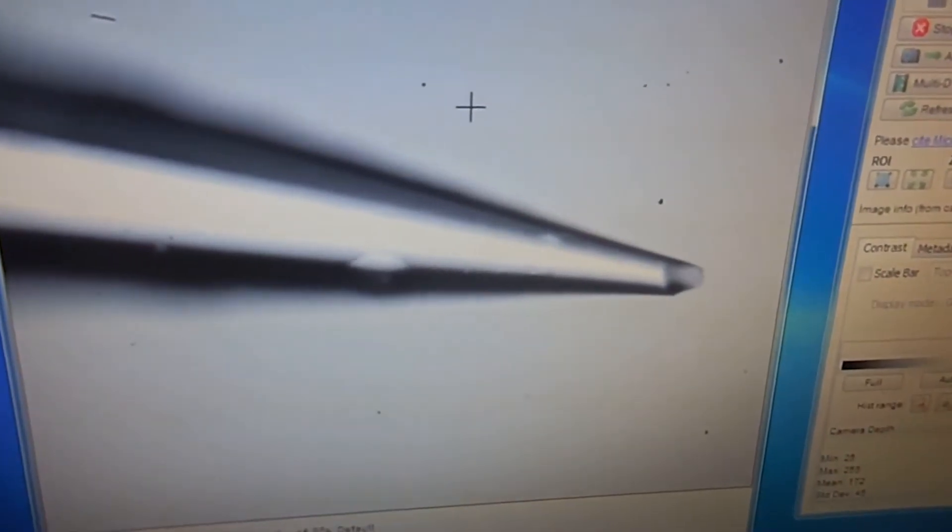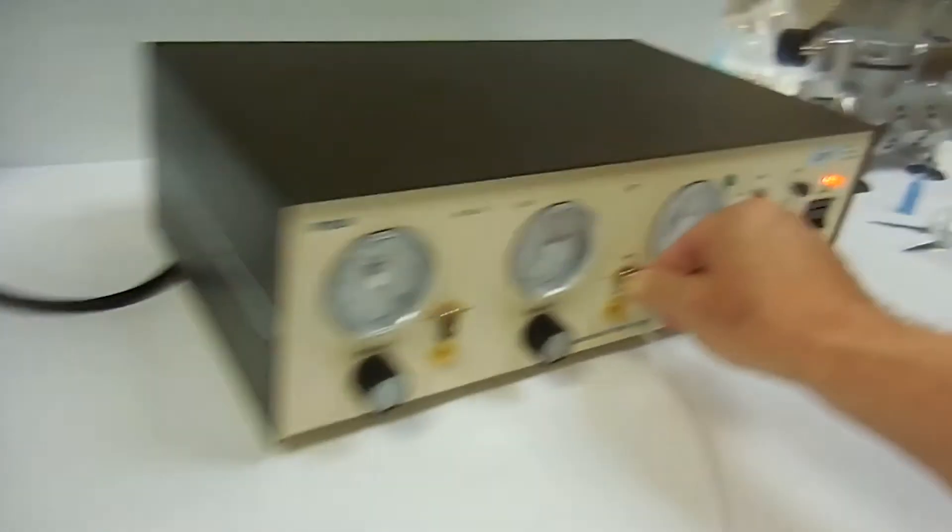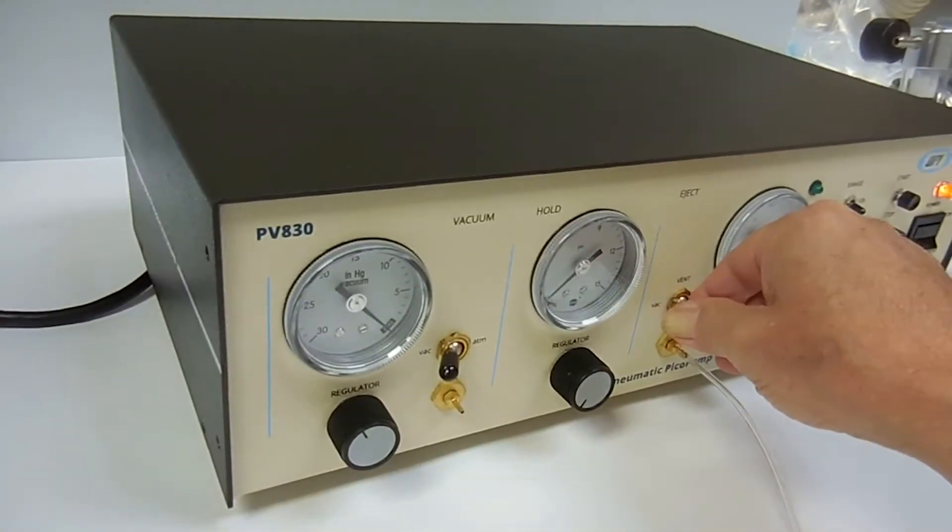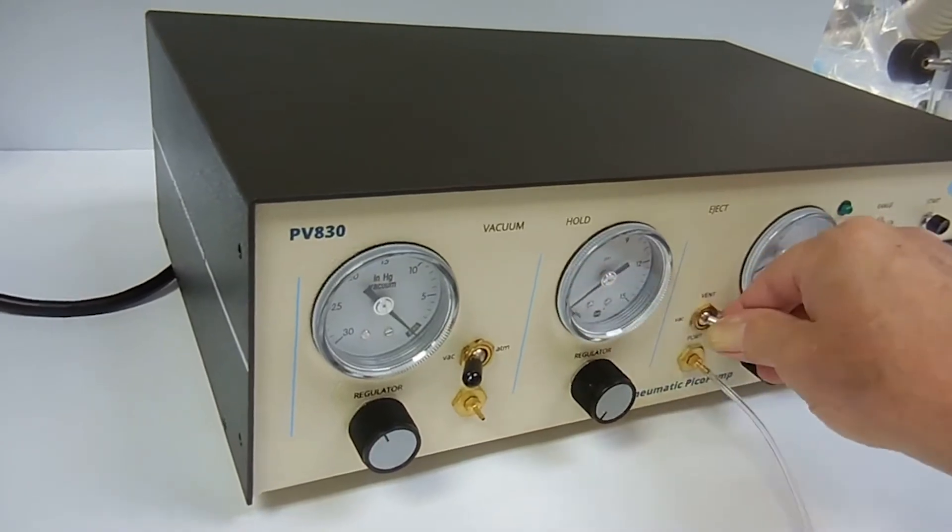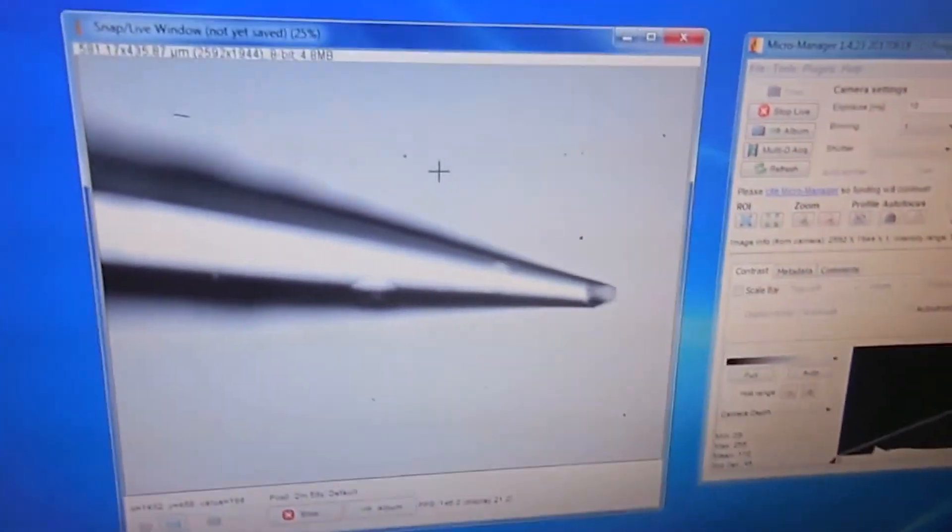If I flip the switch back and forth between vacuum and hold, I'm applying a slight hold pressure. You can see that needle change and over at the tip you can see the fluid changing.